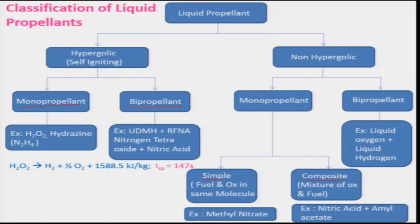It is in liquid state, and one example is methyl nitrate — whenever it will be ignited it will be decomposed and undergo an exothermic chemical reaction, producing a certain amount of heat. It is a very simple non-hypergolic monopropellant. There is also a composite type, where a mixture of oxidizer and fuel is used as a propellant; for example, nitric acid and amyl acetate can be mixed together in a certain proportion and used as a monopropellant, but for this one has to provide a certain amount of ignition energy to initiate combustion.